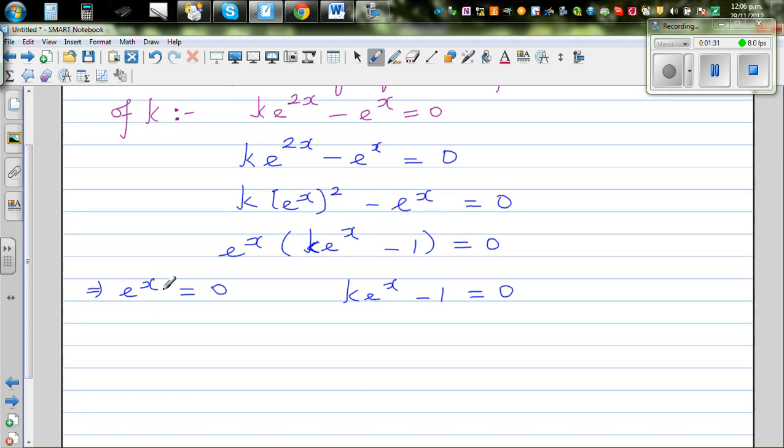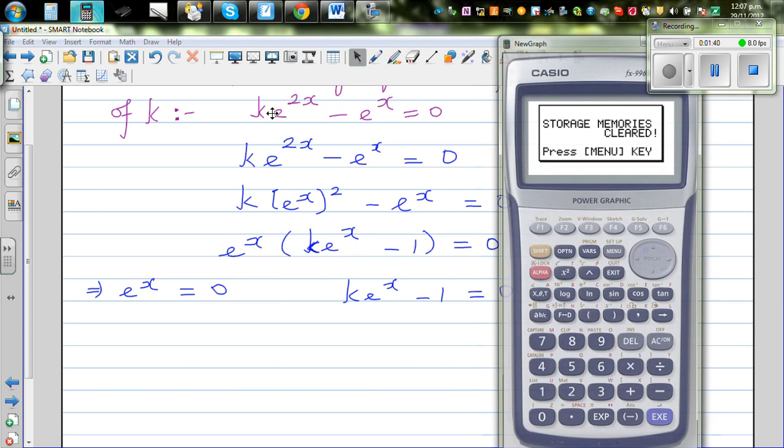Now I want you to think logically. Is this ever possible? E as you know is a number 2.7. So let me show you that on the calculator.